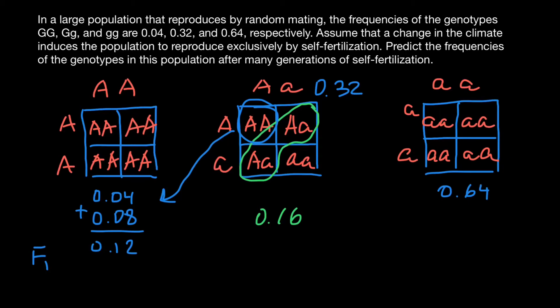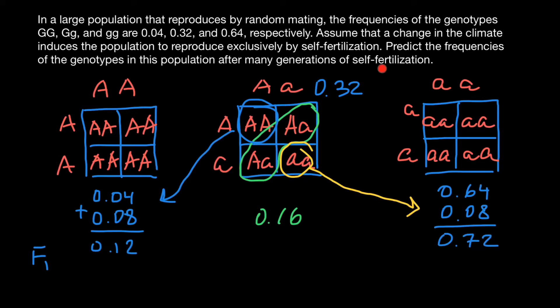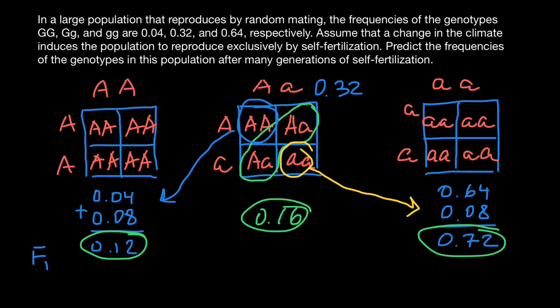The other quarter goes to homozygous recessive. So the frequency of homozygous recessive in the F1 generation increases by 0.08, giving a new frequency of 0.72. To summarize the F1 generation frequencies: homozygous dominant (AA) = 0.12, heterozygous (Aa) = 0.16, and homozygous recessive (aa) = 0.72.